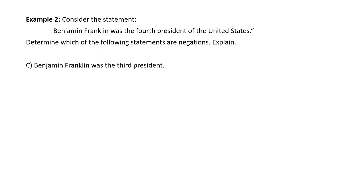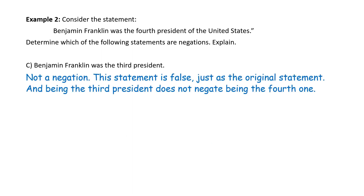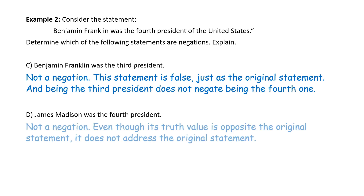C: 'Benjamin Franklin was the third president.' That's not a negation either — this statement is false just as the original statement; however, being the third president does not negate being the fourth one. D: 'James Madison was the fourth president.' We know that's true, but it's not a negation. Even though its truth value is opposite the original statement, it does not address the original statement of whether or not Benjamin Franklin was the fourth president.